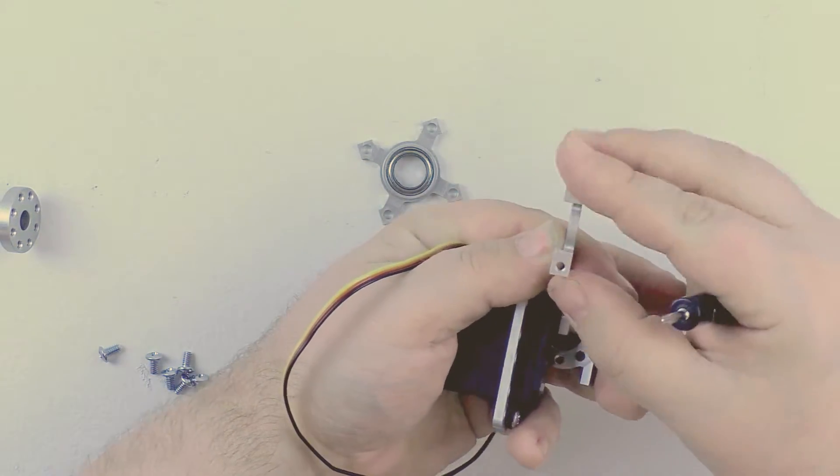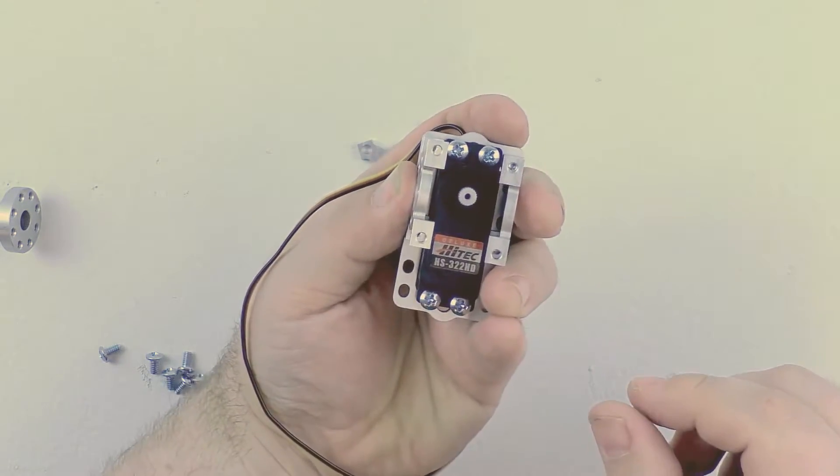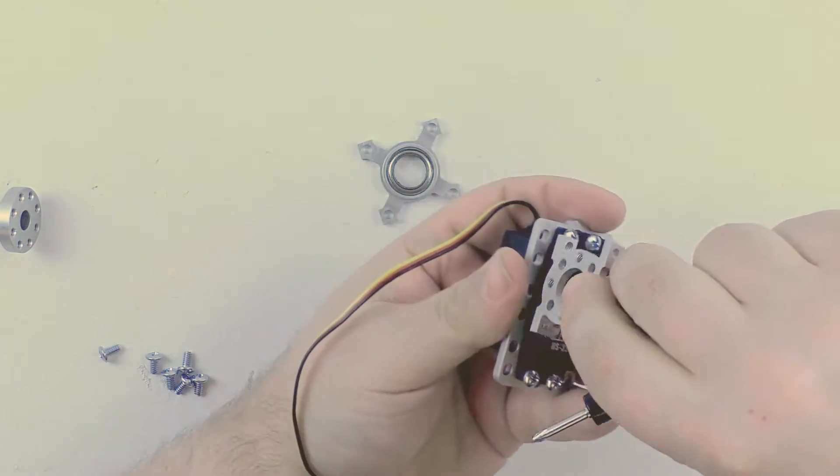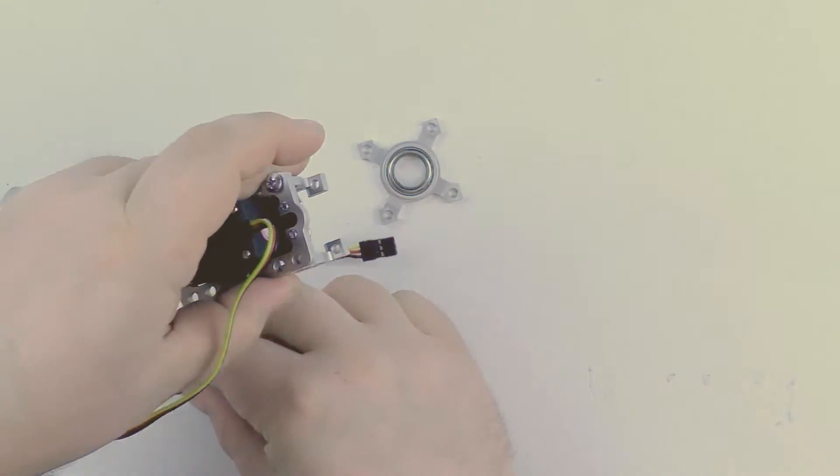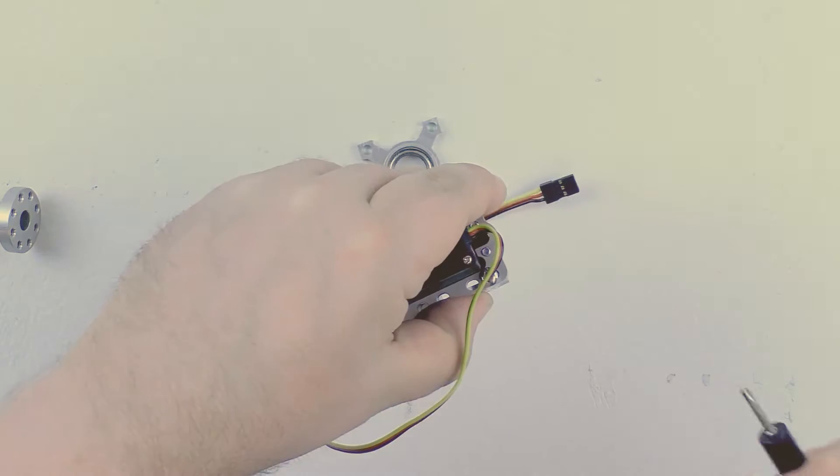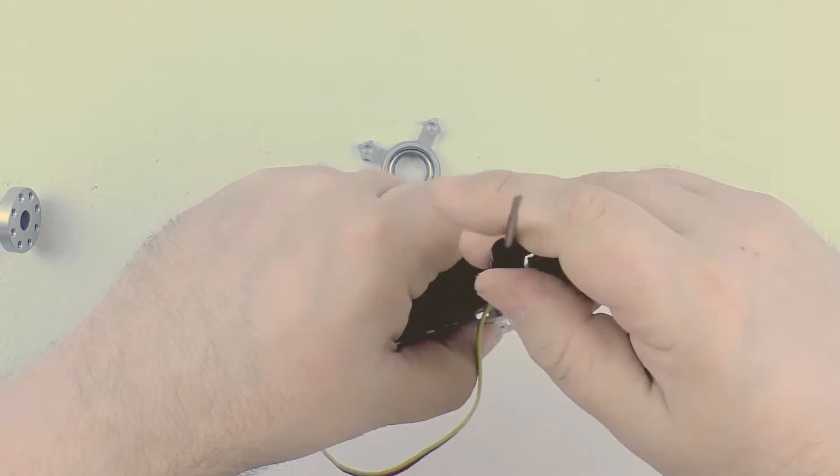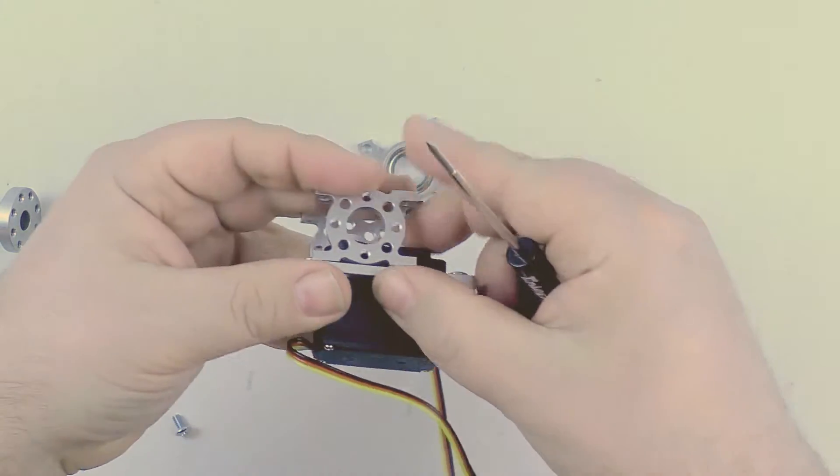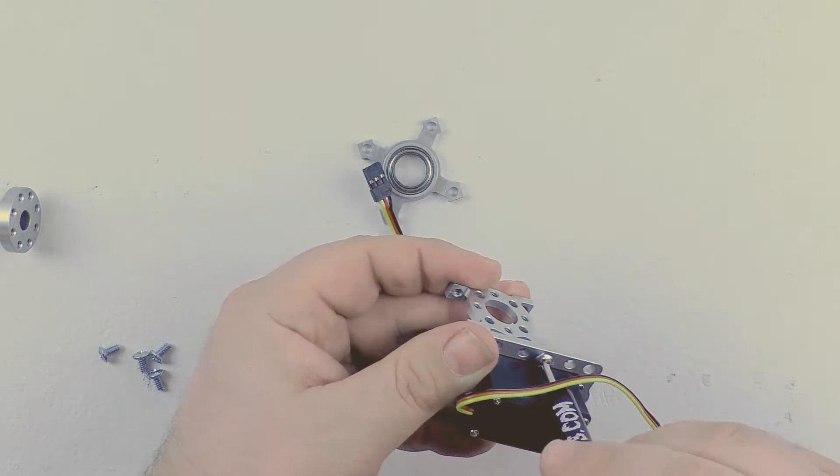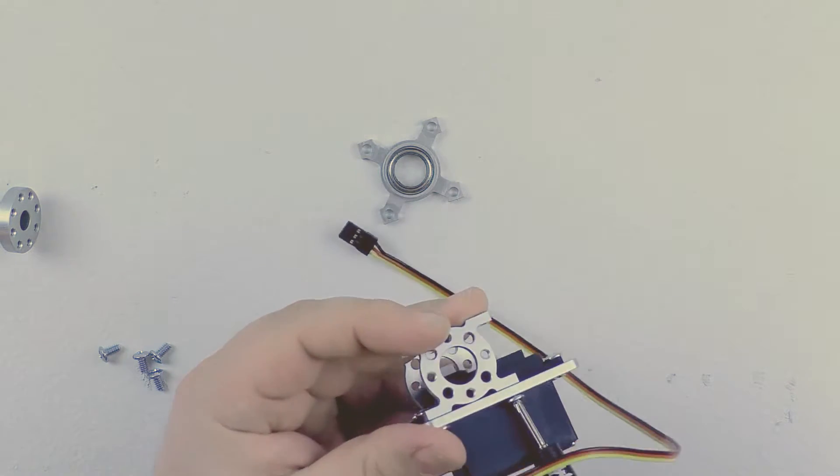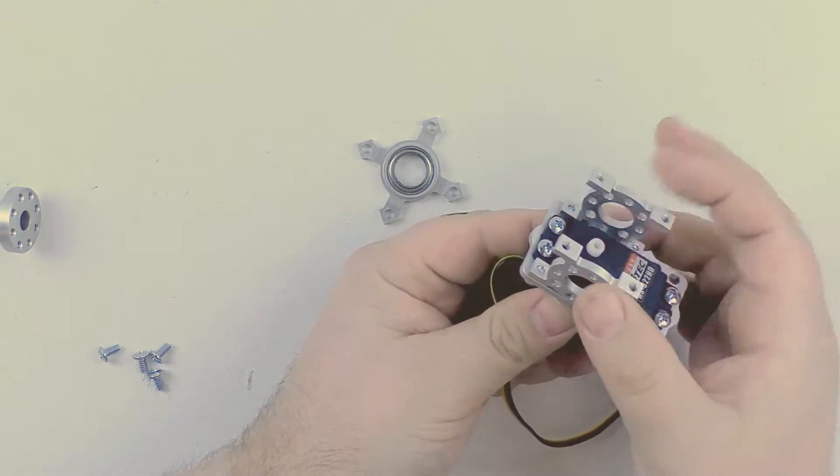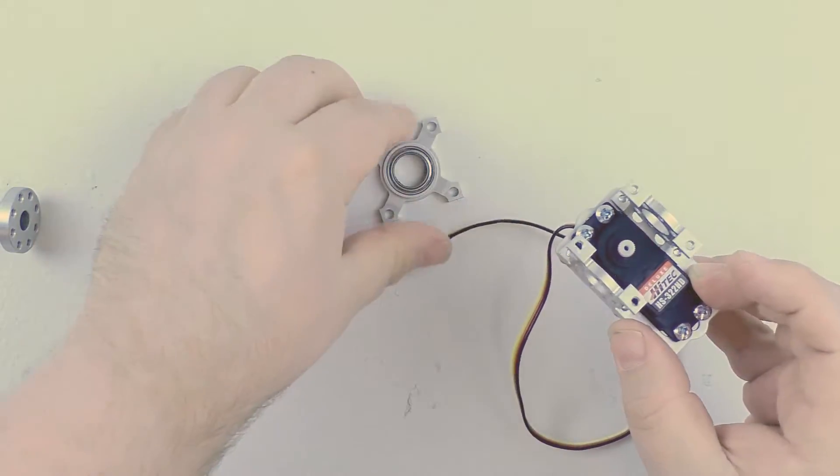You want to make sure that the tabs are facing inward, like this. You don't want to have them facing out like that. So this way is correct. Okay, so we have installed the two side brackets. You can see they are still kind of loose. That is good so that we have a little bit of play before we tighten everything down.